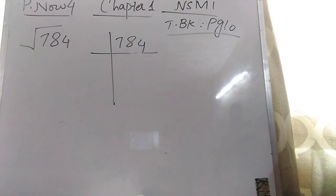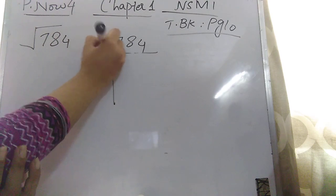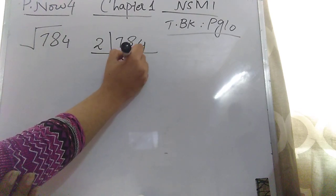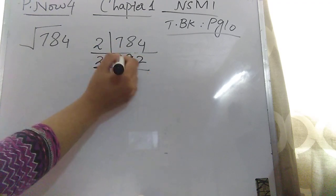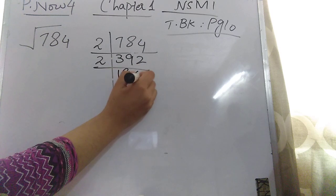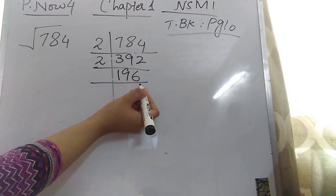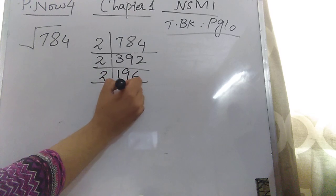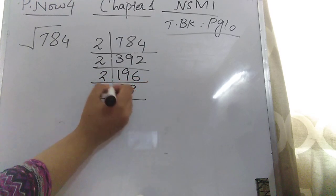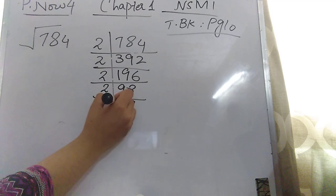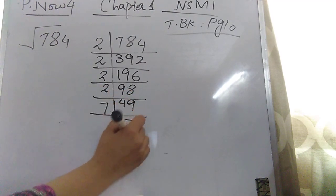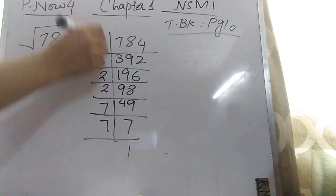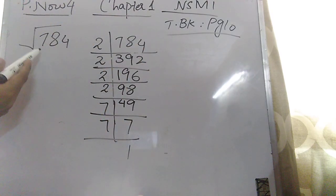The last digit of 784 is even, so it is divisible by 2. Dividing repeatedly by 2: 784 ÷ 2 = 392, 392 ÷ 2 = 196, 196 ÷ 2 = 98, 98 ÷ 2 = 49. Now 49 is divisible by 7: 7 × 7 = 49, and 7 × 1 = 7. So the prime factors of 784 are 2, 2, 2, 2, 7, and 7.